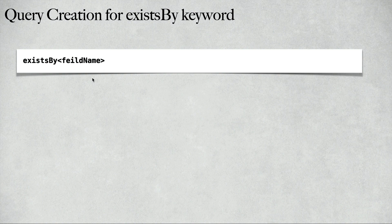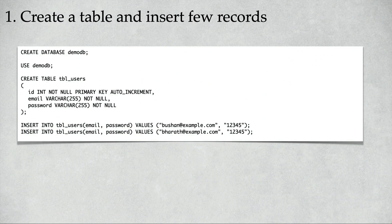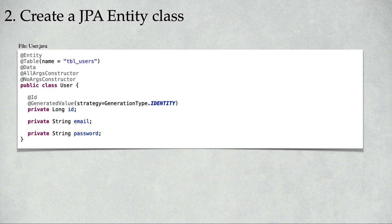The first step is to create the table and insert a few records into the database — we'll create the database, the table, and insert two records. The second step is to create a JPA entity class named User. We'll add the annotations: @Entity, @Table, @Data, @AllArgsConstructor, @NoArgsConstructor. We'll create the properties: id, email, and password, and add the @Id and @GeneratedValue annotations for the id property.